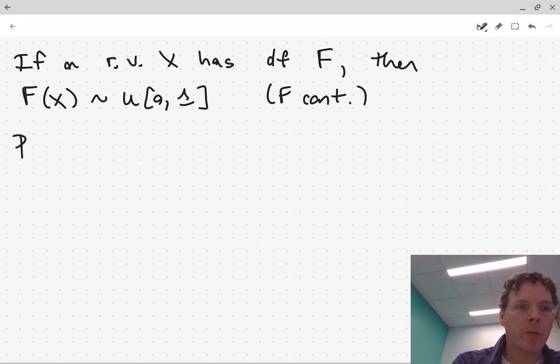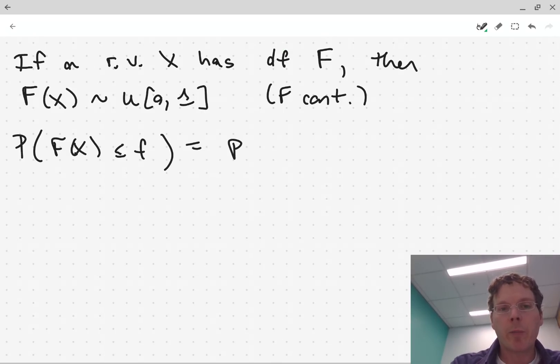Okay, so let's look at this. The probability F of X is less than or equal to, say, any number, say F, okay, is equal to, because F is continuous, and provided little f is a number between 0 and 1, because F is continuous, its distribution function, which is monotonic, is nice and invertible. So we can say that's the probability X is less than or equal to F inverse of F,